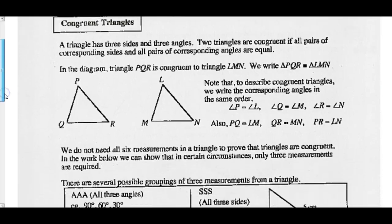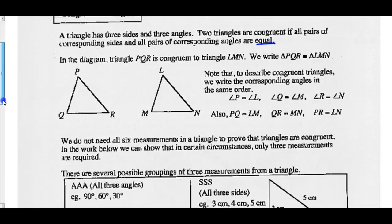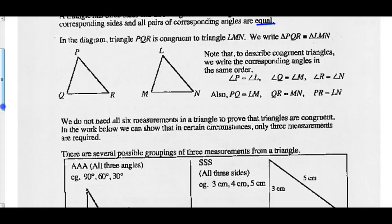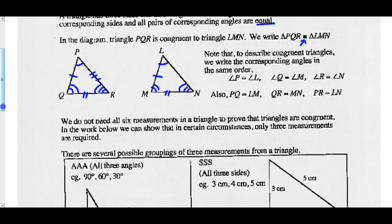Congruent triangles: a triangle has three sides and three angles. Two triangles are congruent if all pairs of corresponding sides and all pairs of corresponding angles are equal. In the diagram, triangle PQR is congruent to triangle LMN — written using the congruent symbol. Note that to describe congruent triangles, we write the corresponding angles in the same order: angle P equals angle L, angle Q equals angle M, angle R equals angle N. For the sides: PQ equals LM, QR equals MN, and PR equals LN. If that's true, they are congruent triangles.